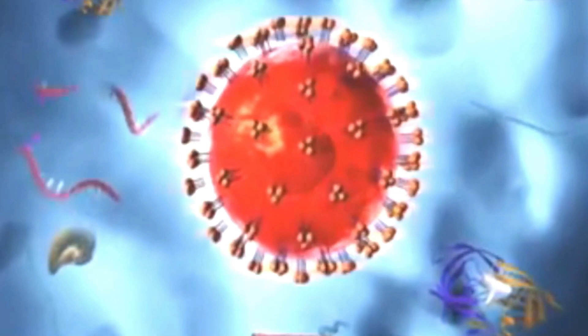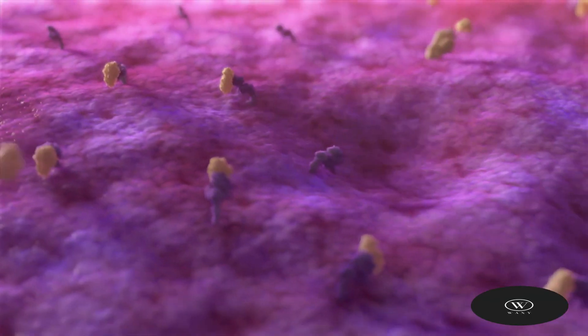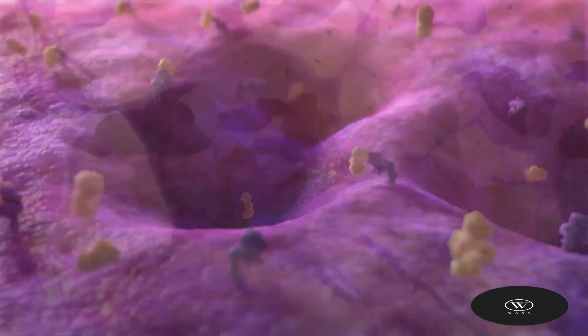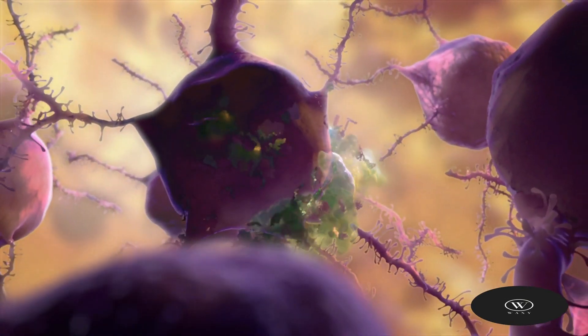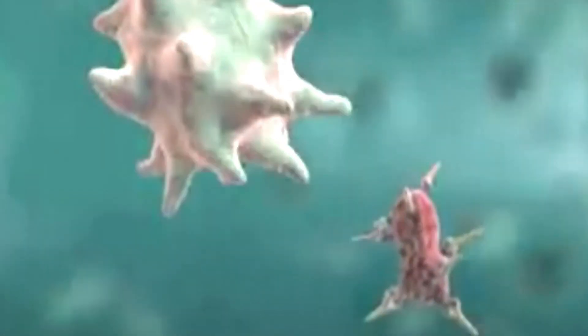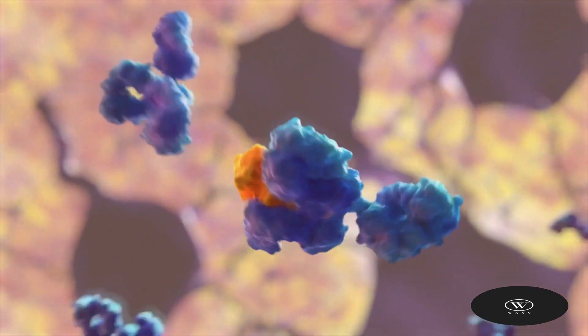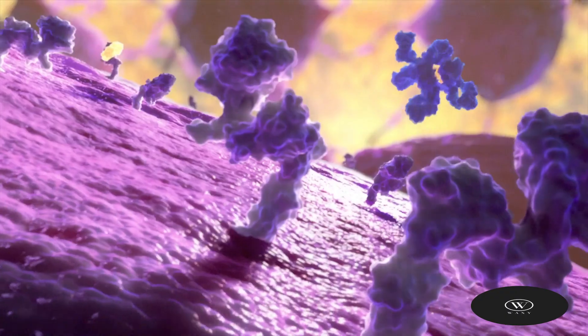After the infection, the person's immune system remembers what it learned about how to protect the body against that disease. The body keeps a few key lymphocytes, called memory cells, that go into action quickly if the body encounters the same virus again. When the familiar antigens are detected, B lymphocytes produce antibodies to attack them.